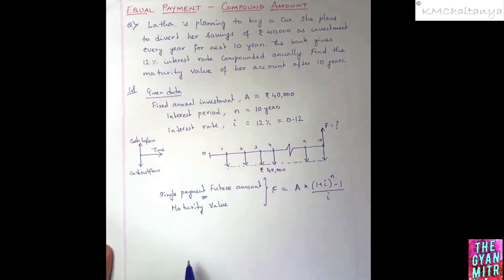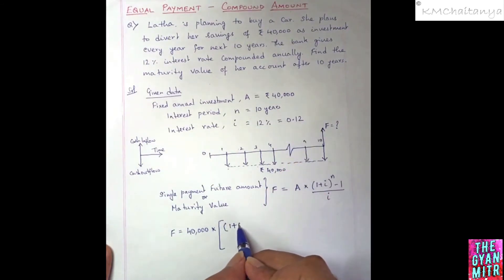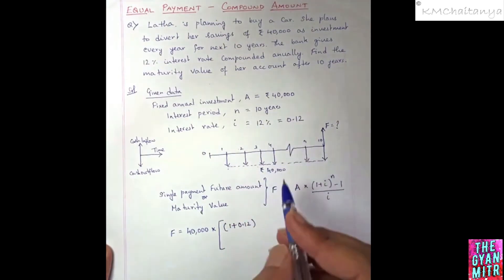Now let's substitute this particular value. Substituting it over here, F is equal to A, which is the annuity or the fixed annual investment, 40,000, into 1 plus I, which is the rate of interest in decimal, 0.12, to the power of N, N value is 10 years, minus 1, this divided by value of I, which is 0.12.